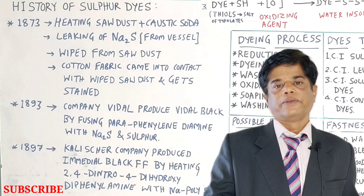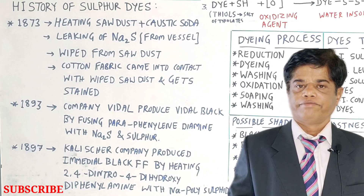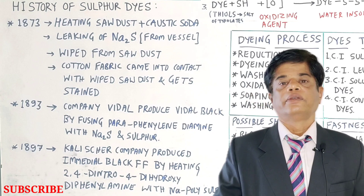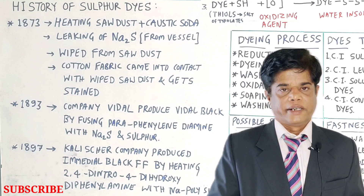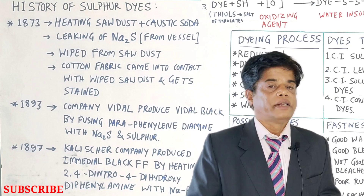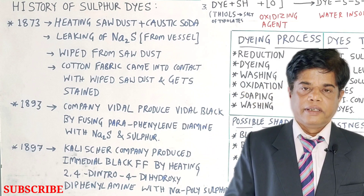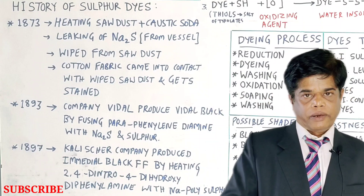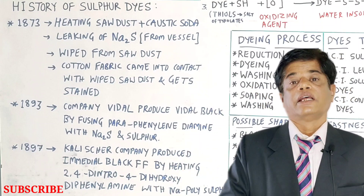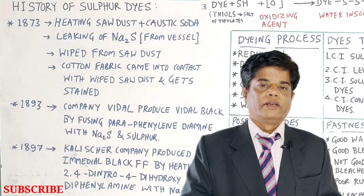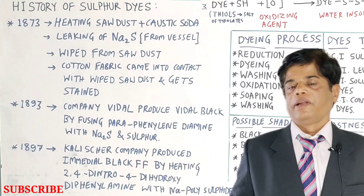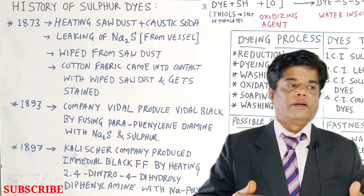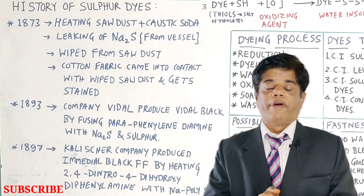A color was produced, and this is how the invention of sulfur dyes started. One name associated with sulfur dye history is Vidal. The popular sulfur black dye — Sulfur Black 1 — is associated with the Vidal company, and their product was commercially known as Vidal Black.